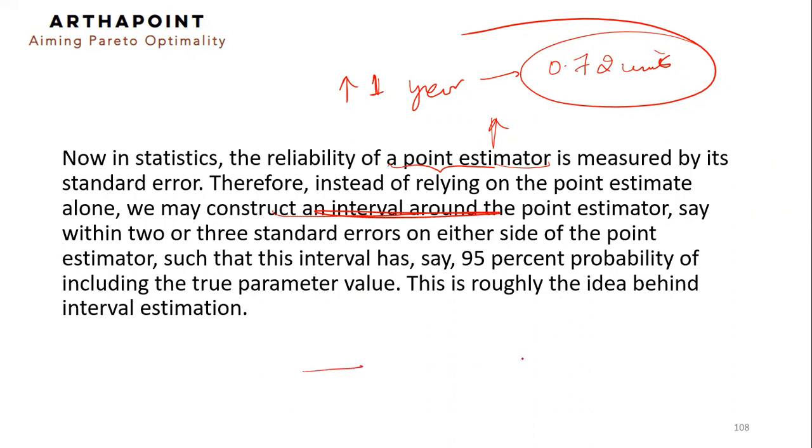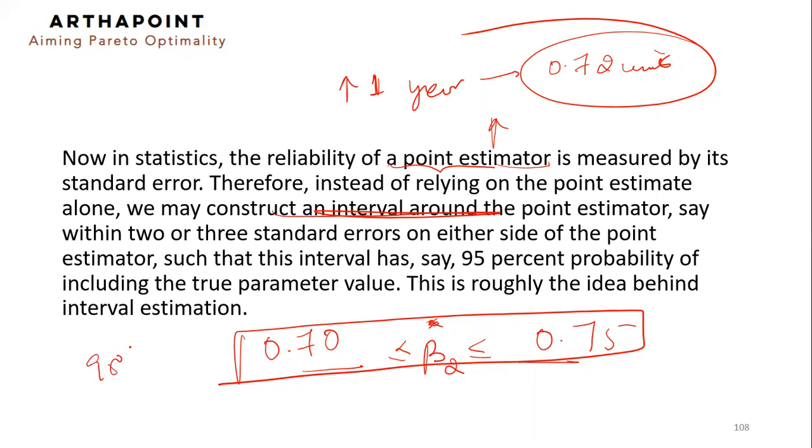We create an interval which says that approximately, your beta 2 is going to be between 0.70 to 0.75. Supposedly, something like this, we create an interval. And we say that I am 95% confident that whenever you increase your schooling by one year, your salary will increase by anything in between 0.70 to 75 units. And I'm sure about it, the confidence that I carry is 95% confidence.